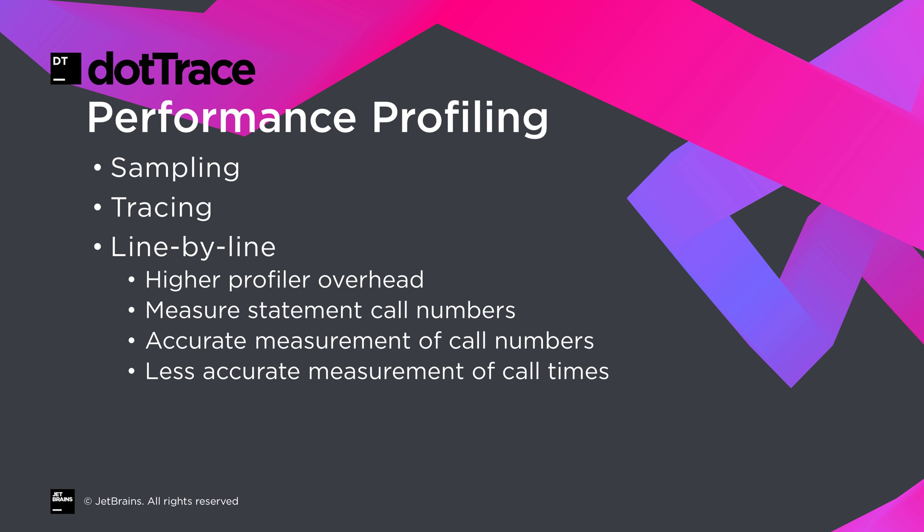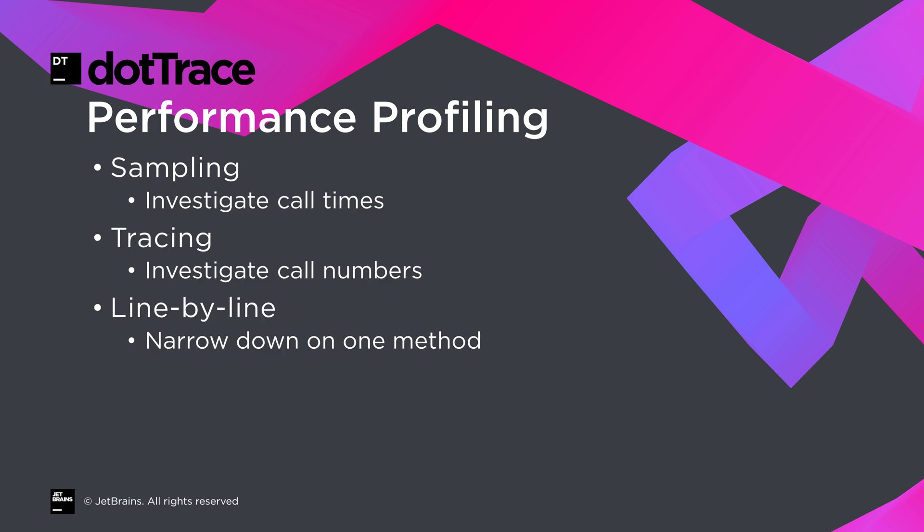Line by line is similar to tracing in terms of accuracy, but instead of measuring method calls, it will collect data for every single statement that is executed. This does, of course, come with a larger overhead. As a rule of thumb, use line by line if you know exactly what function causes problems and you want to focus on how that specific function works.